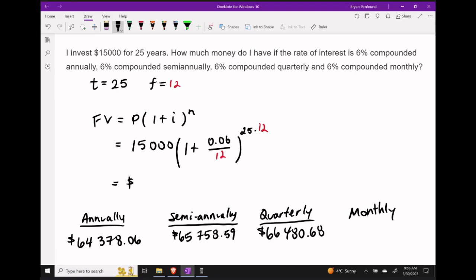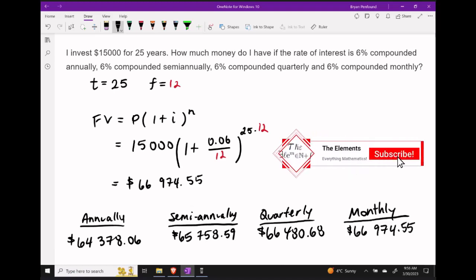And then finally, updating our frequency number to 12 should give us the future value for 6% compounded monthly. And putting this into our calculator, we get $66,974.55.